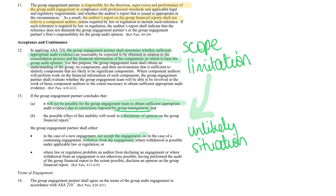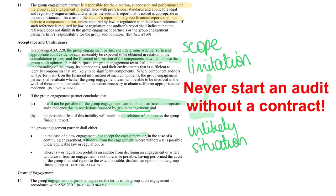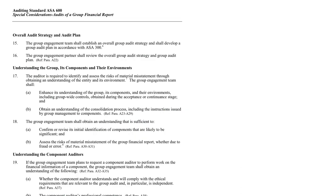You have to have a contract — under ASA 210, an engagement letter. Like any audit, you have to have an audit plan for the group audit. The group partner is also responsible for making sure that what's happening in the components is happening appropriately.